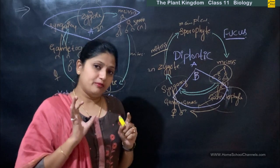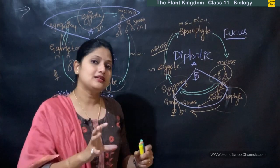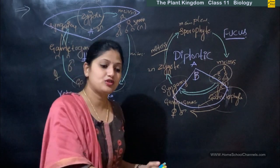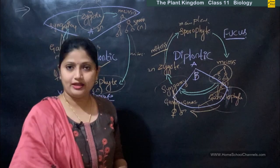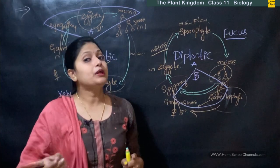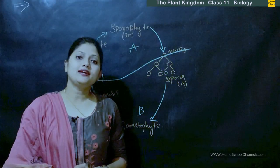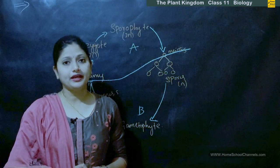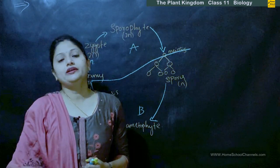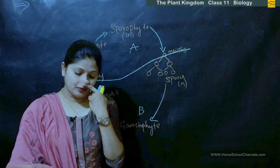So: the main plant body is the dominant stage. If it is haploid — haplontic life cycle. If it is diploid — diplontic life cycle. Next we move on to the haplo-diplobiontic life cycle. In case of bryophytes and pteridophytes, the alternation of generation is quite different compared to algae and other plant forms.